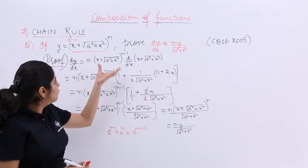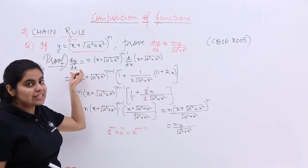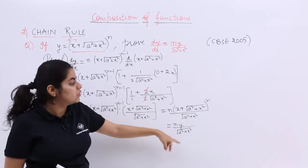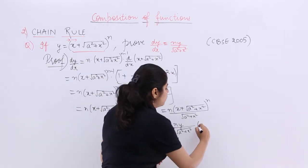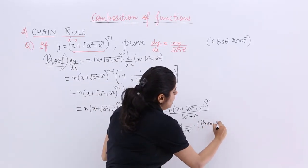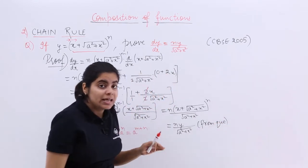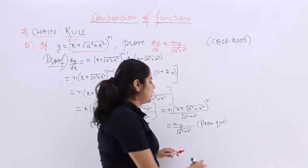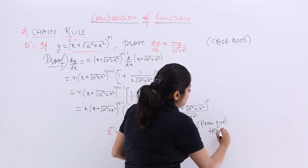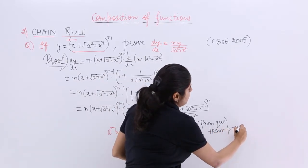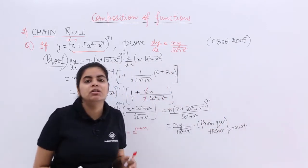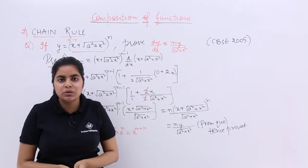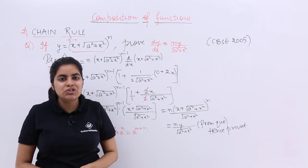So you started with the finding of dy by dx. You got this thing. And you see this only you had to prove. So it is basically y from where from question. And hence proved that yes, my dy by dx is equal to ny upon under root a square plus x square. Let us write it hence proved. So this was a simple question based on the CBSE previously examination. The year was 2005. The topic was chain rule.